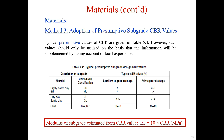The third measure is the adoption of presumptive subgrade CBR values. Typical presumptive values of CBR are given in a table based on extensive experience and lab testing. Designers select values according to material type and classification, whether the subgrade is highly plastic clay or silt, silt clay, sandy silt, or sand. For example, if the subgrade is composed of sand with excellent to good drainage or fair to poor drainage, the CBR is recommended to be taken between 10 and 18. If lab or field testing cannot be conducted, refer to the empirical values in this table accounting for local experience.